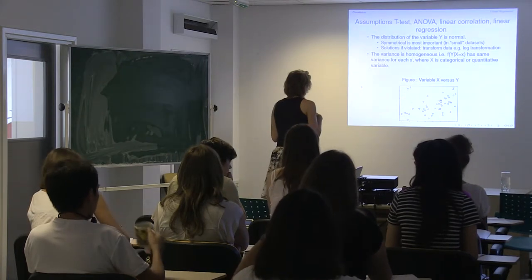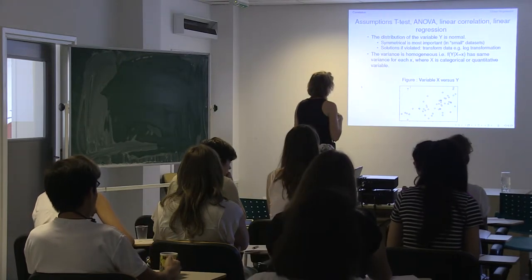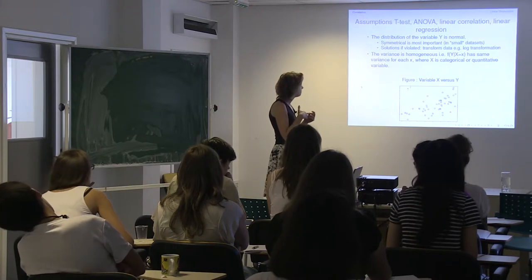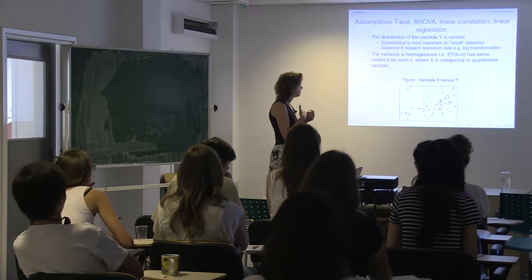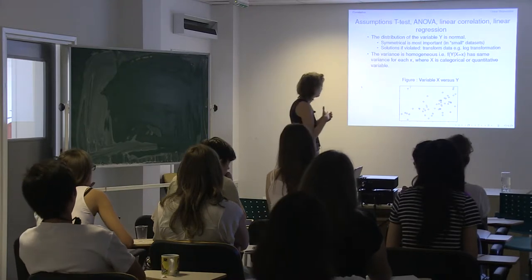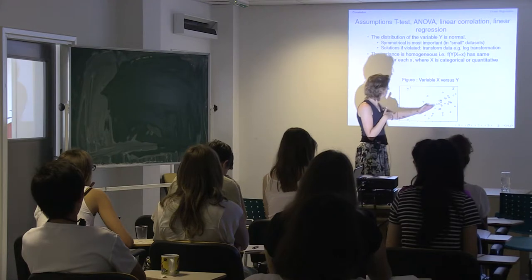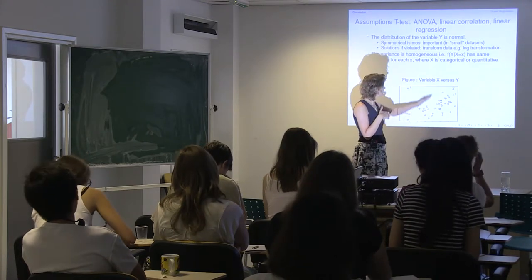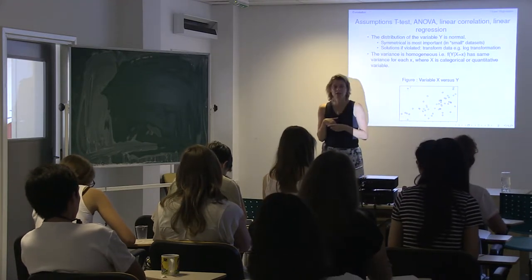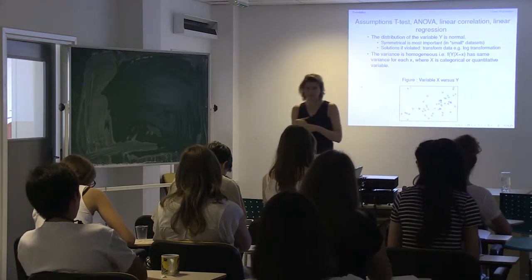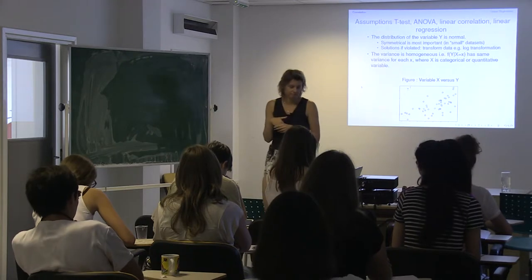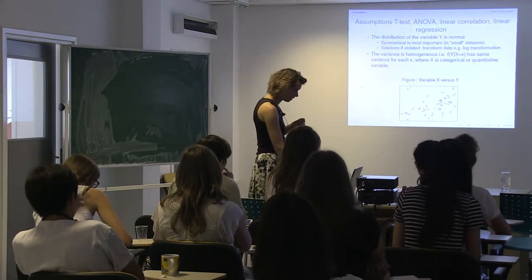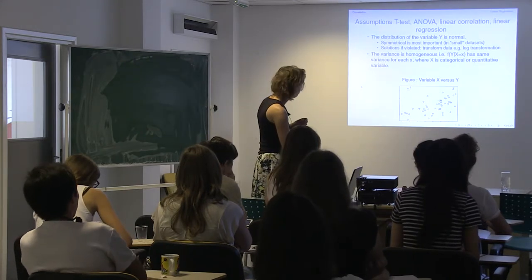The other thing we always assume is that the variance is homogeneous — that means around the line, if you have a line here, the variation should be the same along it. I will show a figure later where that's probably more clear.